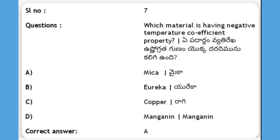Next, which material has a negative temperature coefficient property? Options: A) mica, B) eureka, C) copper, D) manganin. The answer is A, mica.